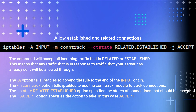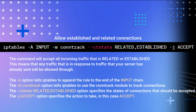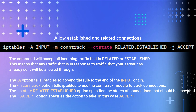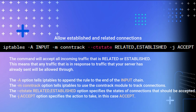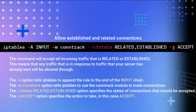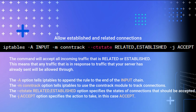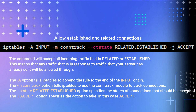Allow Established and Related Connections: this command accepts all incoming traffic that is related or established, meaning any traffic in response to traffic your server has already sent will be allowed through. The -A option appends to the input chain. The -m conntrack option uses the conntrack module to track connections. The --ctstate RELATED,ESTABLISHED option specifies the connection states to accept, and -j ACCEPT specifies the action.